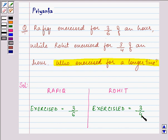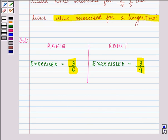Now we need to think which one of them is greater, 3 by 6 or 3 by 4. We can do it by first of all having a common denominator.